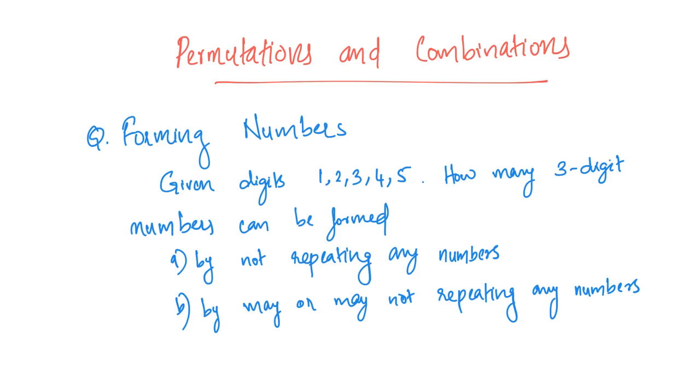What we are going to do now is this question on forming numbers. How many three-digit numbers can be formed out of these five digits by not repeating any numbers?